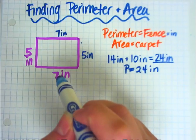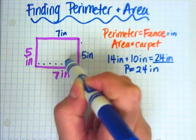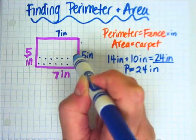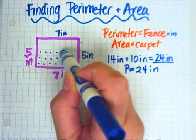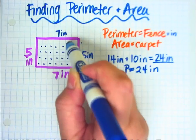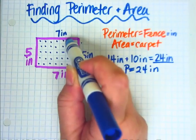Now, if your shape doesn't have squares, you can't do this. 1, 2, 3, 4, 5, 6, 7, 8, 9, 10, 11, 12, 13, 14, 15, 16, 17, 18, 19, 20, 21, 22, 23, 24, 25, 26, 27, 28, 29, 30, 31, 32, 33, 34, 35.